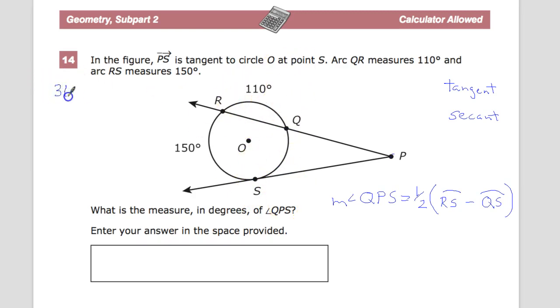360 degrees in a circle. I need to add the arcs that I already know the measures for. That's what's known. Since there's only one more arc to find its measure, I just subtract. So this measure is 100 degrees.